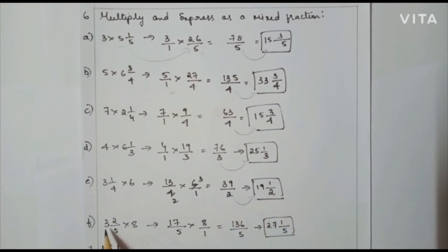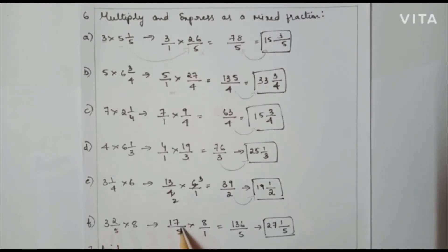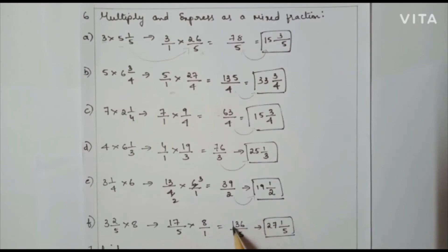Next one: 3(2/5) × 8. That is 5×3=15, plus 2 = 17/5, so 17/5 × 8/1. Here I can't cancel. So 17 × 8 = 136, and 5 × 1 = 5, giving 136/5. Converting to a mixed fraction gives 27 and 1/5.